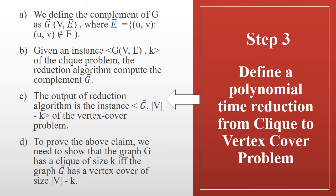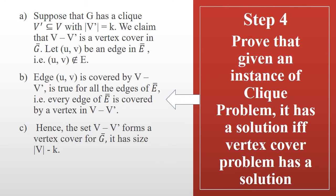We need to understand that if G has a clique V' of size k, then the complement Ḡ has a vertex cover of size |V| − k. Step four proves: given an instance of the clique problem, it has a solution if and only if the vertex cover problem has a solution. If it's a clique problem of size k, we prove the vertex cover problem has size |V| − k, and vice versa — if the complement graph has a vertex cover of size |V| − k, then it has a clique of size k.